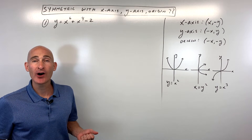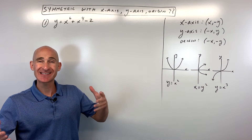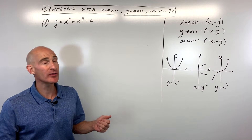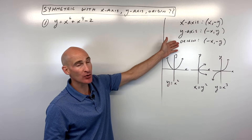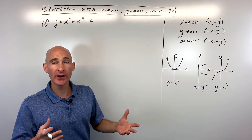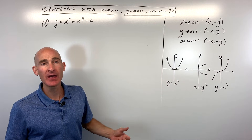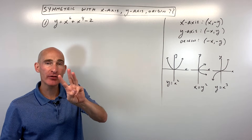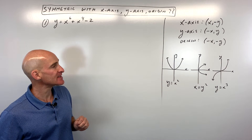In this video, you're going to learn how to tell whether an equation has symmetry with the x-axis, y-axis, or origin. It could be one, two, all three, or none of them. We're going to go through three examples to help you understand this concept.